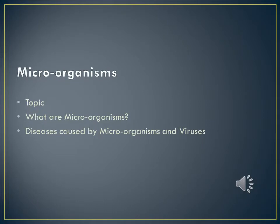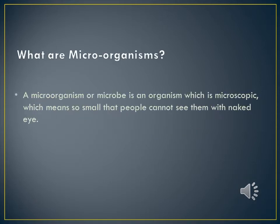In this chapter on Micro-Organisms, we study what are micro-organisms and diseases caused by micro-organisms and viruses. Living things are also called organisms. Some organisms or living things, such as bacteria, are very tiny or small and cannot be seen with our naked eyes. They are called micro-organisms. To observe micro-organisms, we need the help of a microscope.